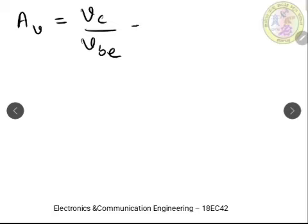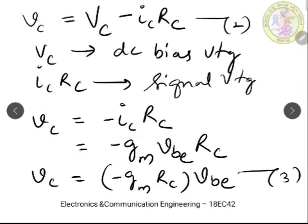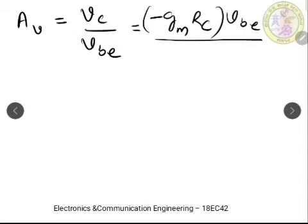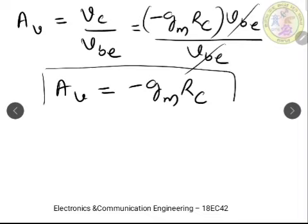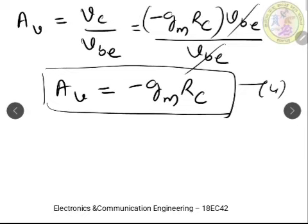Now substituting Equation 3 into the gain expression: vc = −Gm × Rc × Vbe, substituted in the numerator divided by Vbe. The Vbe component cancels, and we get the gain Av = −Gm × Rc. This is an important result — take it as Equation 4 — which gives the gain of the amplifier.